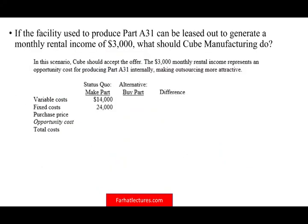Now let's add an assumption. If the facility used to produce part A31 can be leased out to generate monthly rental income of $3,000, what should we do? This $3,000 is an opportunity cost. Because you're producing the part yourself it takes up space, and the next best use of that space is renting it for $3,000. Your true cost of making is therefore $14,000 variable + $24,000 fixed + $3,000 opportunity cost = $41,000.